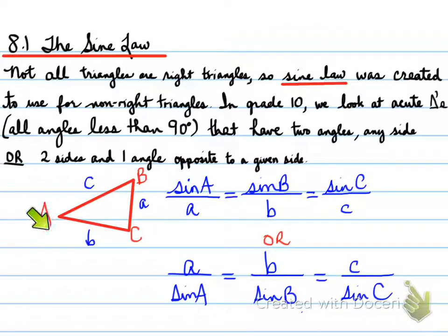Big A is here. Big A looks over little a. This triangle is called ABC. Big BC side is little a. Big AC is little b. Big B looks over little b, big C looks over little c, and big A looks over little a. We use this formula, sine law, when we have two angles in any side, or two sides in one angle opposite to a given side.